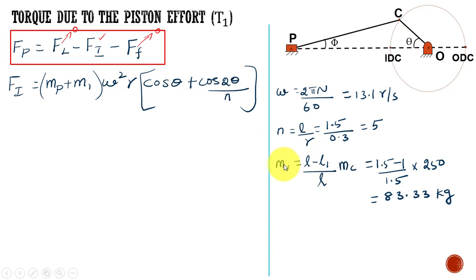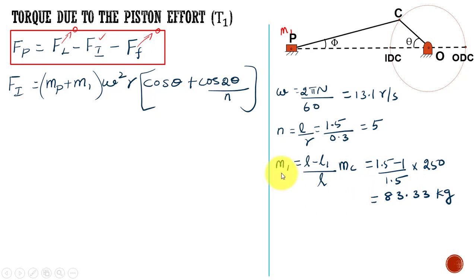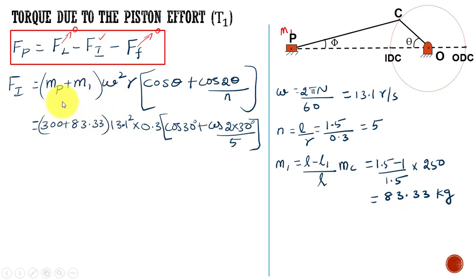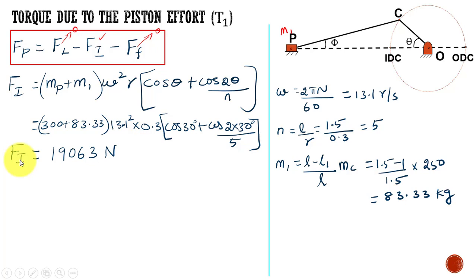M1 is the part of the connecting rod mass placed at the piston, found by M1 = (L − L1)/L × mc, which gives M1 = 83.33 kg. Substituting — mass of piston 300 kg, M1 = 83.33 kg, ω = 13.1 rad/s, R = 0.3 m, θ = 30° — we calculate the inertia force as 19,063 Newton.